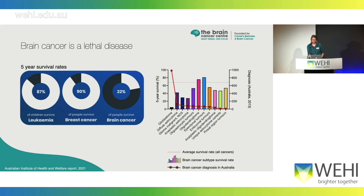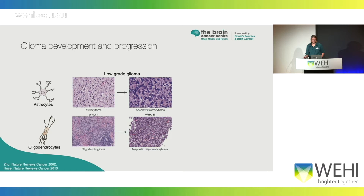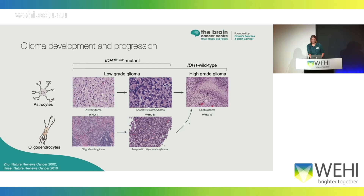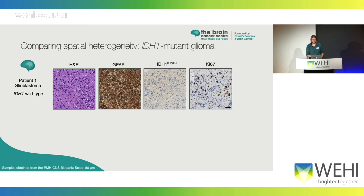A little bit about glioma: they're derived from the glial cell types astrocytes or oligodendrocytes to generate astrocytomas or oligodendrogliomas. We have low-grade gliomas which are most frequently mutant for IDH1 R132H, an oncometabolite driver, and then a portion of these will develop into high-grade gliomas, or will develop de novo. These high-grade gliomas are generally IDH1 wild type, also known as glioblastomas. We were interested to compare the heterogeneity and the TME of the high-grade IDH1 mutant anaplastic astrocytomas and the IDH1 wild type glioblastomas.